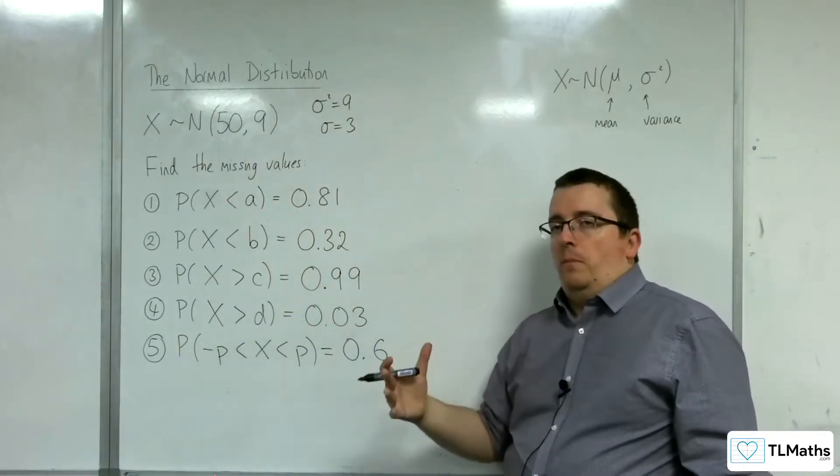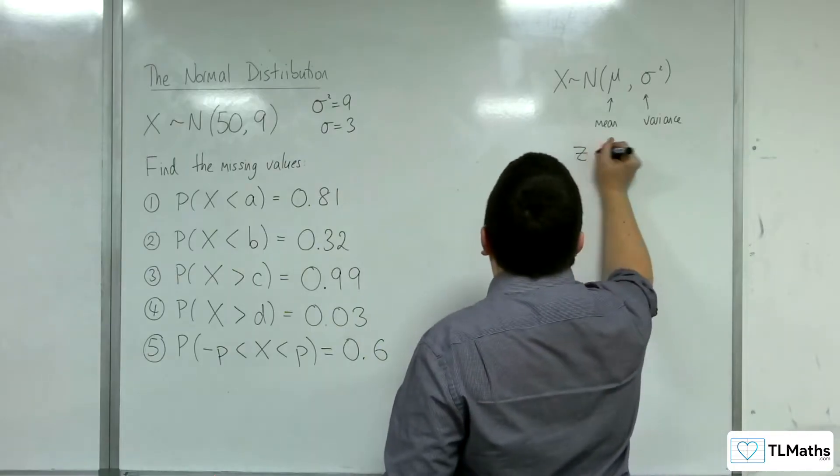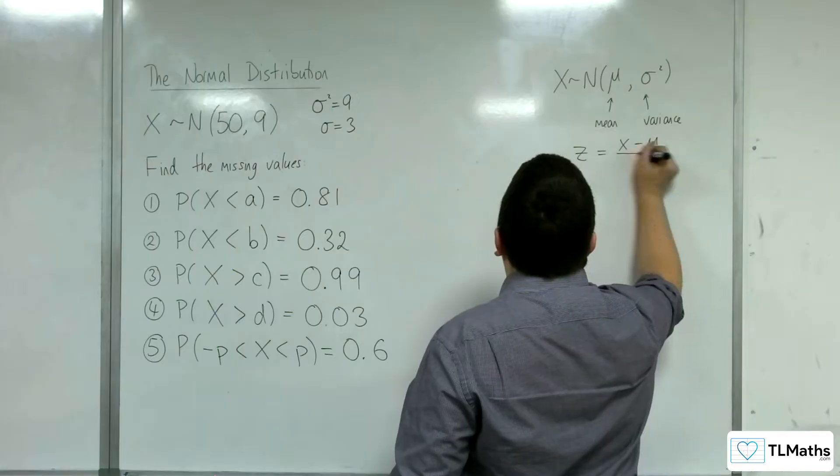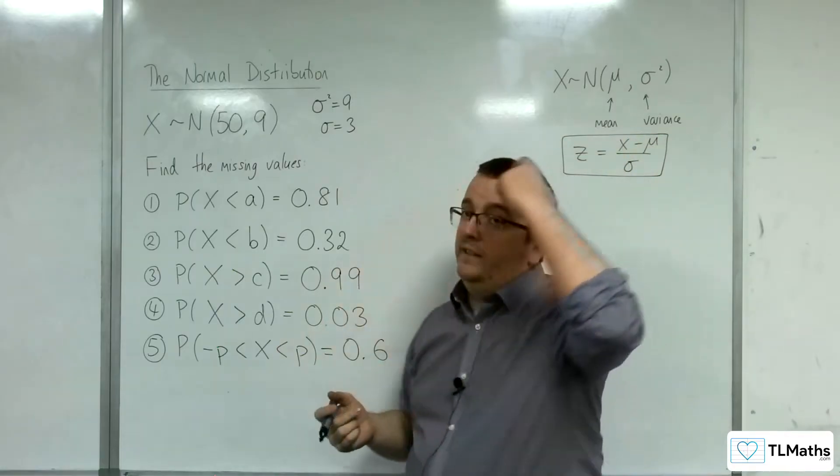In order to solve these problems using our tables, we're going to need the formula z is equal to x take away mu over sigma. So remember, you don't get given that, you're going to need to learn that.